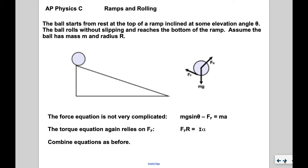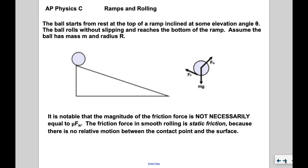MG sine theta acts from the center of mass so it exerts no torque. Therefore the torque equation is F sub F times R equals I times alpha. We know how to combine the equations: put in the expression for I, put in A over R for alpha, and combine them as we have before.